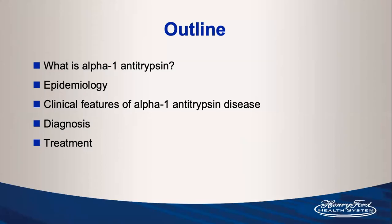I'll start by talking about the protein itself, its structure, function, and the genetics of disease, then moving into epidemiology, the clinical features of alpha-1 antitrypsin disease, how to diagnose it, and then how to treat it.